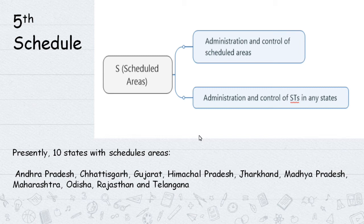For the Fifth Schedule, a trick to remember the states: think of states under the schedule - those under pressure. These include states from South and Central India with significant tribal populations under scheduled area administration.